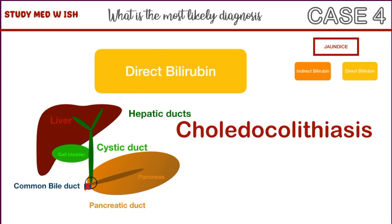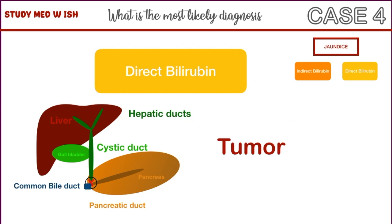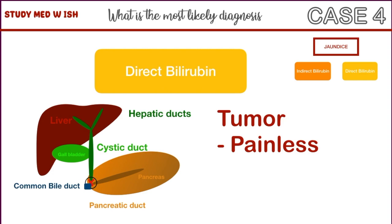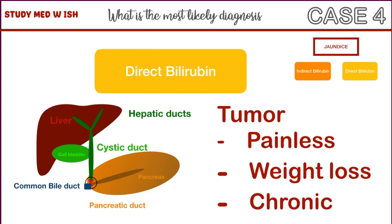An increase in direct bilirubin can also be caused by a tumour in the head of the pancreas. However, our patient is less likely to have a tumour because in such cases there may not be any pain, and in case of malignancy, the patient may also experience weight loss. Plus, the presentation would be more chronic. So taking all this into consideration, cholesterol gallstones is the most likely diagnosis.